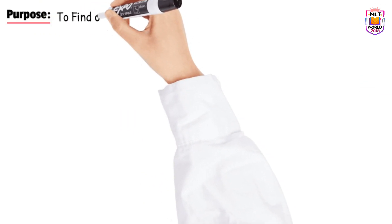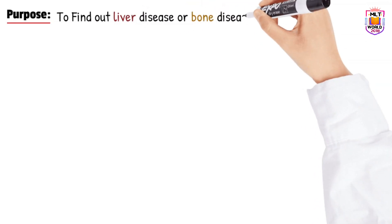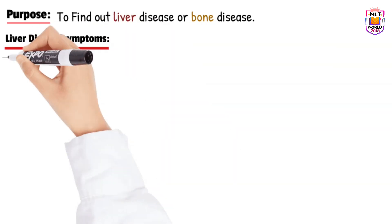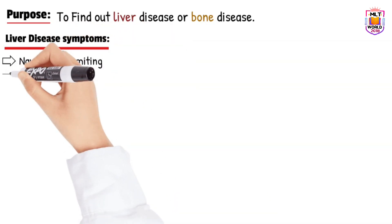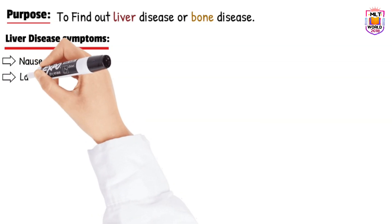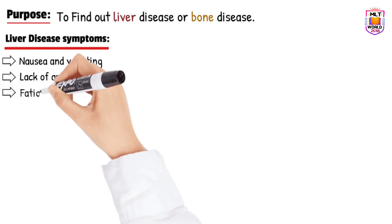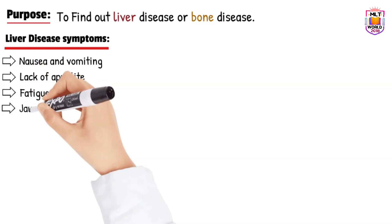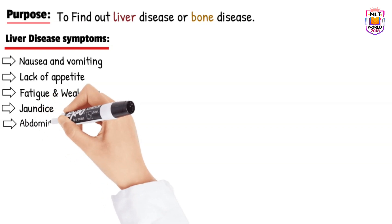The main purpose of this test is to find out either liver disease or bone disease, because ALP is majorly produced in the liver and in smaller quantities in bones and other organs. If there is a liver disease, the patient will show symptoms and the doctor will recommend an ALP test. Those symptoms are: nausea and vomiting, lack of appetite, fatigue and weakness, joint and abdominal pain.